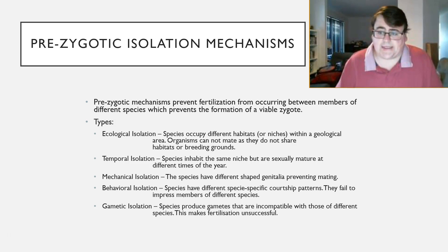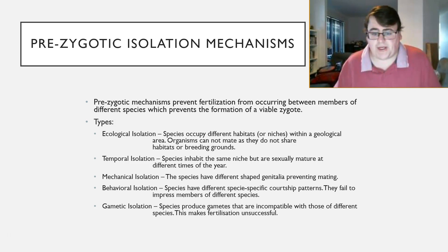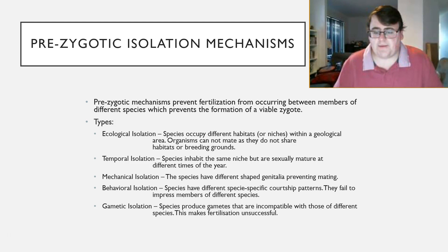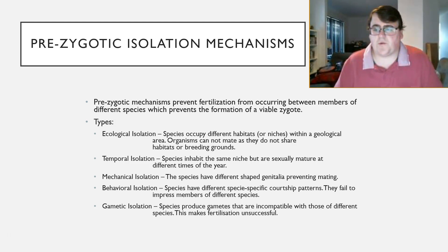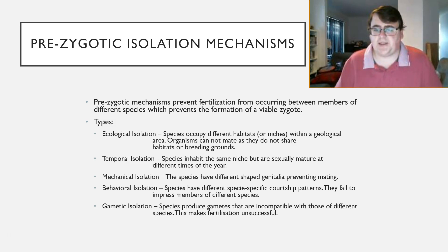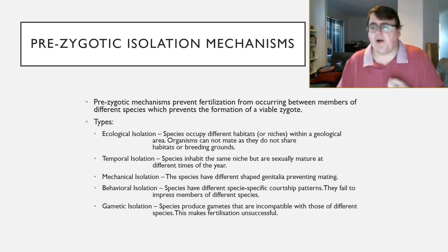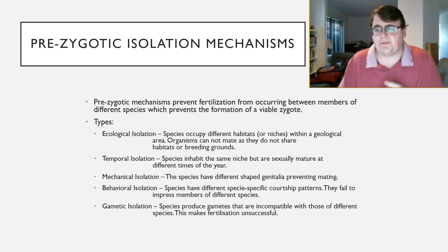Temporal isolation — temporal meaning time. While the species are in the same habitat, they're going to be sexually mature at different times of the year, so they want to reproduce at different times of the year. Therefore, because they're wanting to create offspring at different times of the year, they never actually meet up to create offspring.